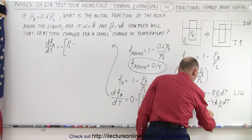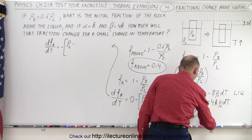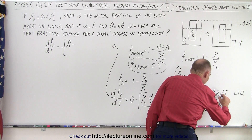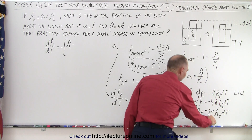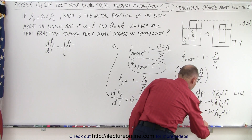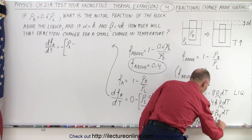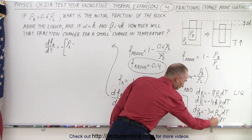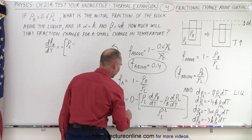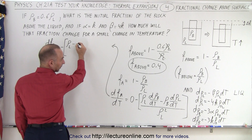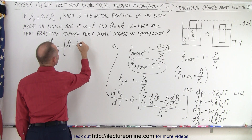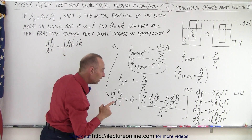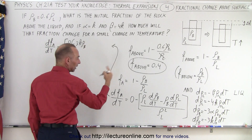And for the block, the differential of the density of the block equals minus 3 alpha times the original density of the block times dT. Since alpha equals k, the change in density of the block equals minus 3k times the original density times dT. Dividing both sides by dT gives minus 3k times the original density of the block.